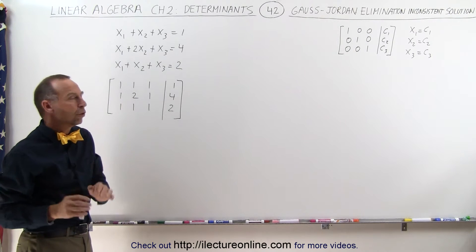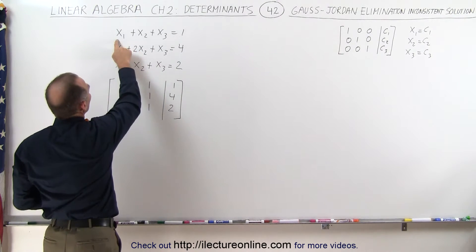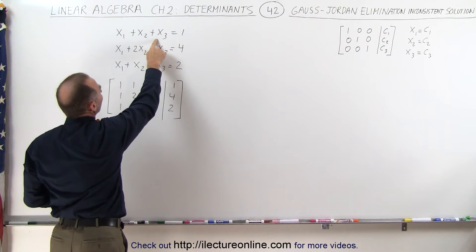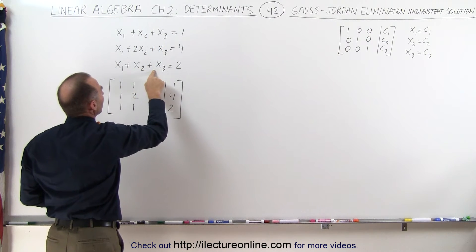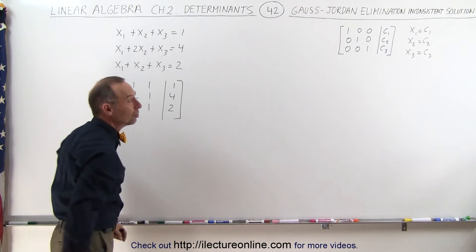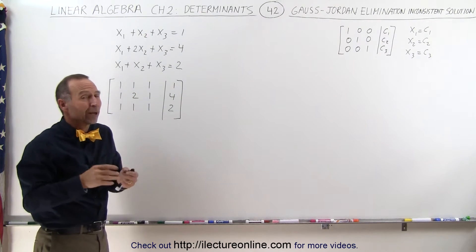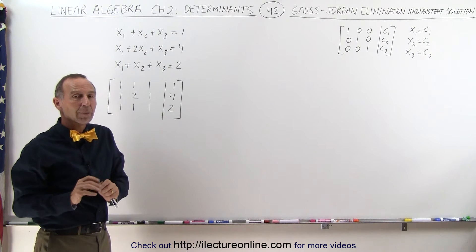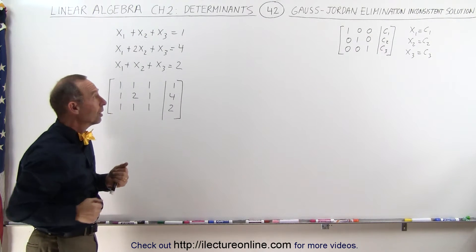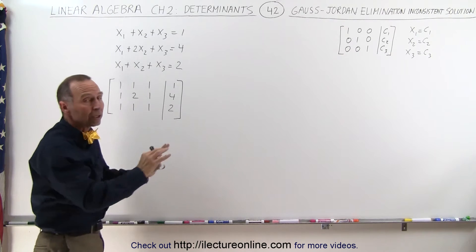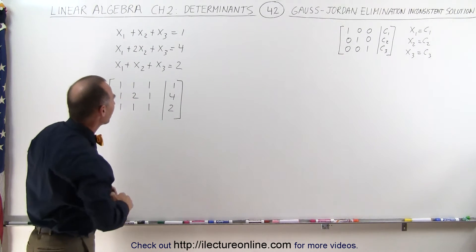But if you take a close look, you can already see there's a problem. When we add x1 plus x2 plus x3 in the first equation, we get 1. But if we add x1, x2, and x3 in the third equation, we get 2. That cannot be possible, so we already know something is wrong. Let's still work it out using the Gauss-Jordan elimination method to see what it looks like when a problem is inconsistent.